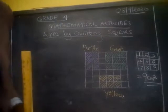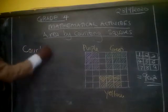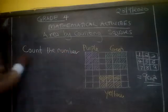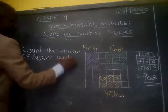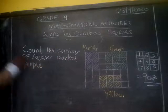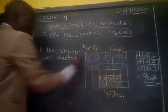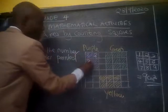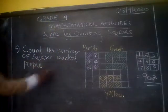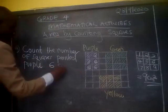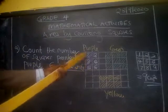The question would be: count the number of squares painted purple. That is the first question. So we come here and count: one, two, three, four, five, six. The area covered by purple is six square units.